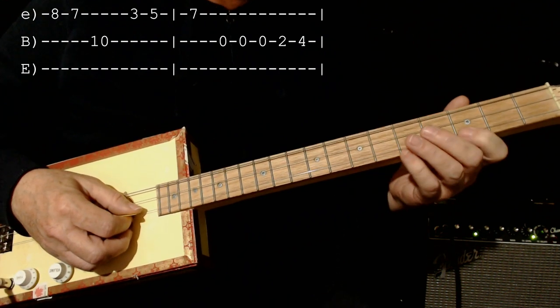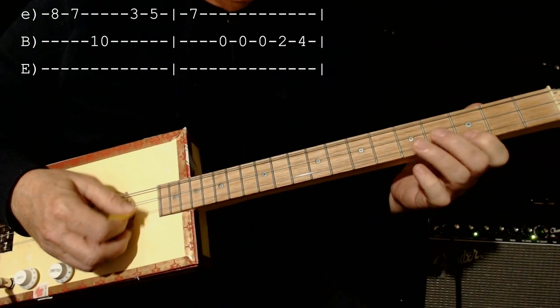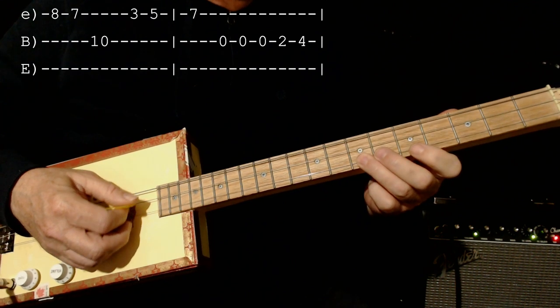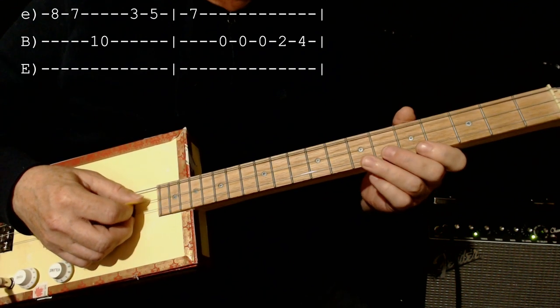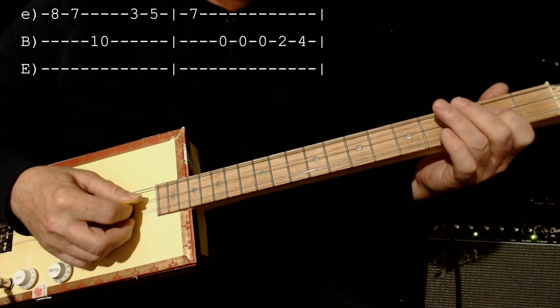Then it starts down on 3. So that was 3, 5, 7 on the 1st string. Then the middle string. 1 more. 2, 4.